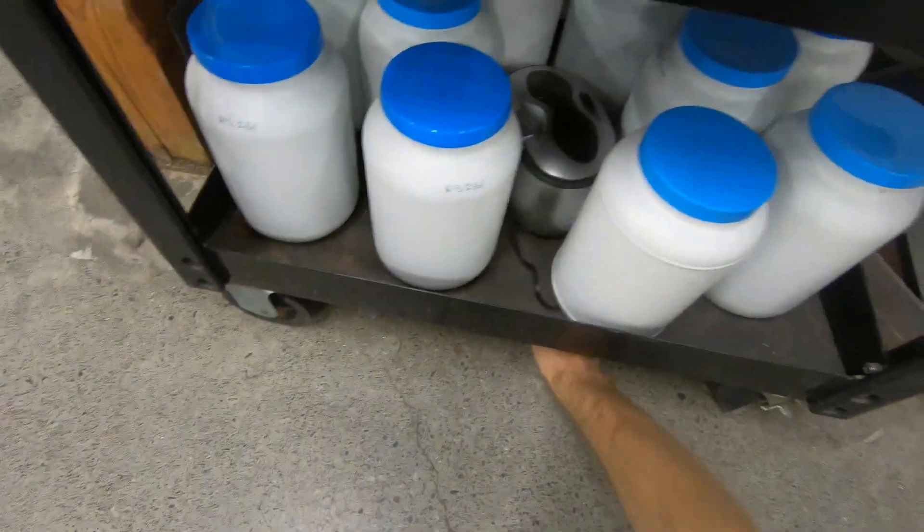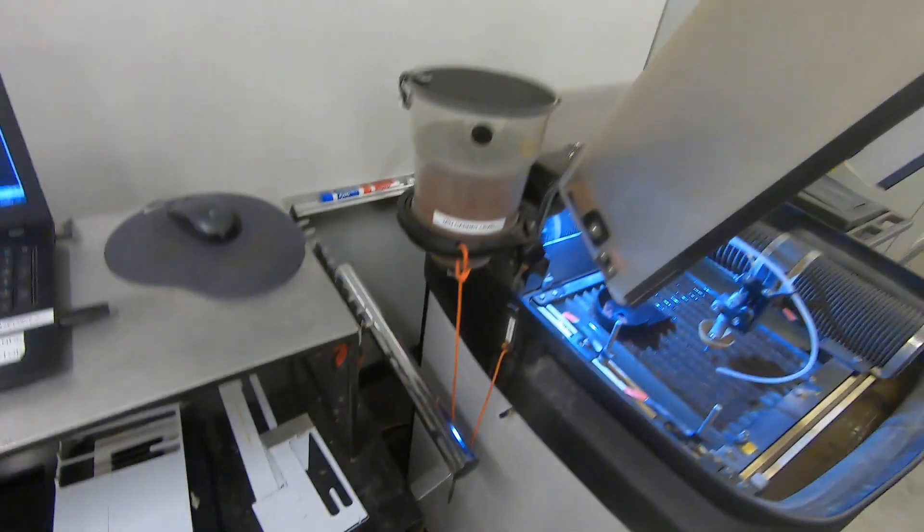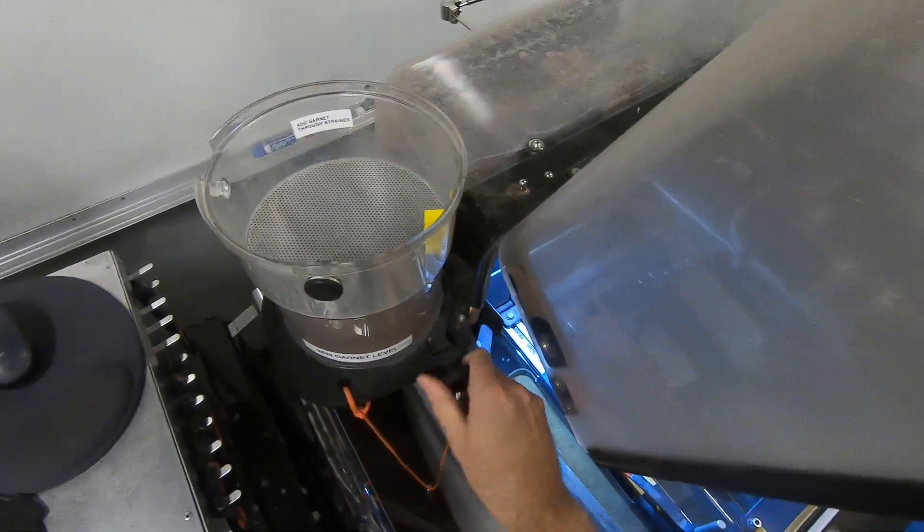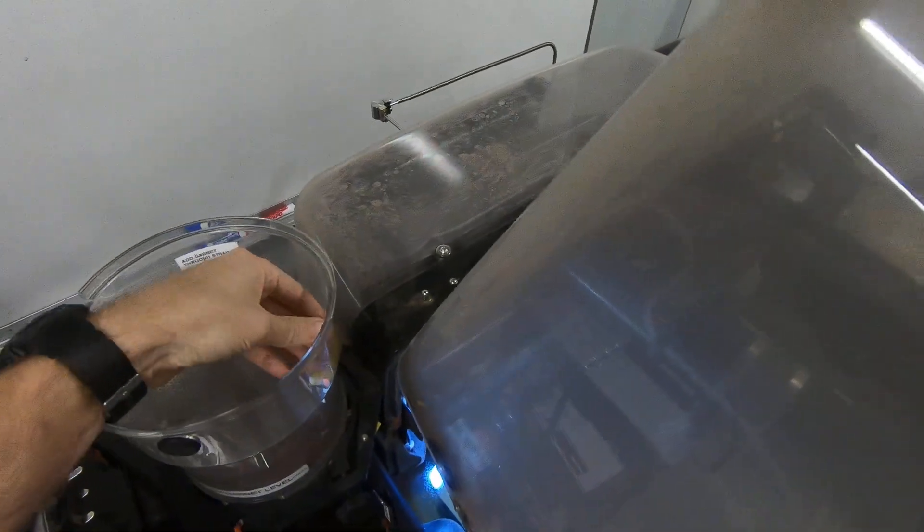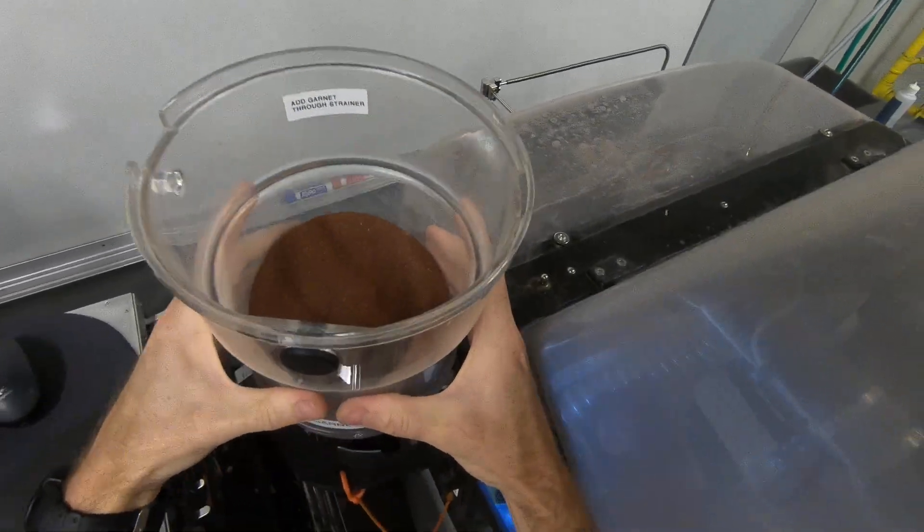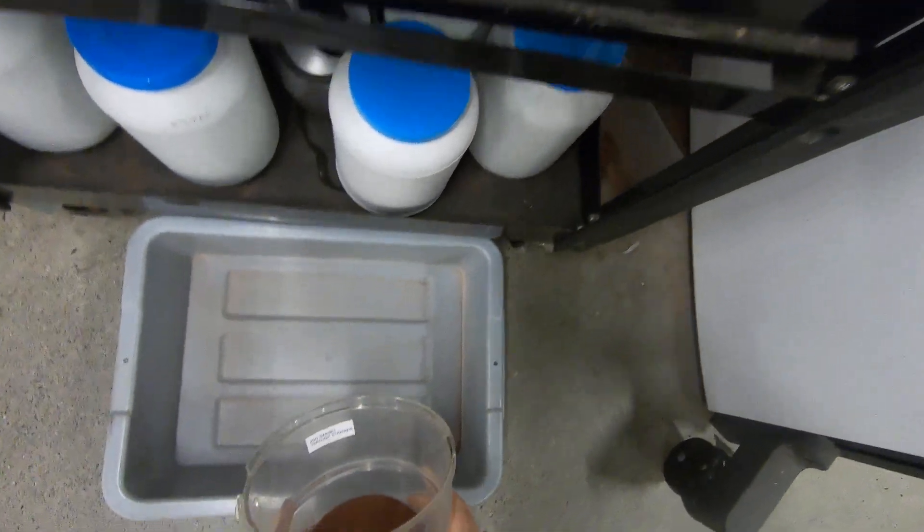Down below here, we have a bin and take the lid off, loosen this knob, pull the screen out, take our garnet, dump it in here.